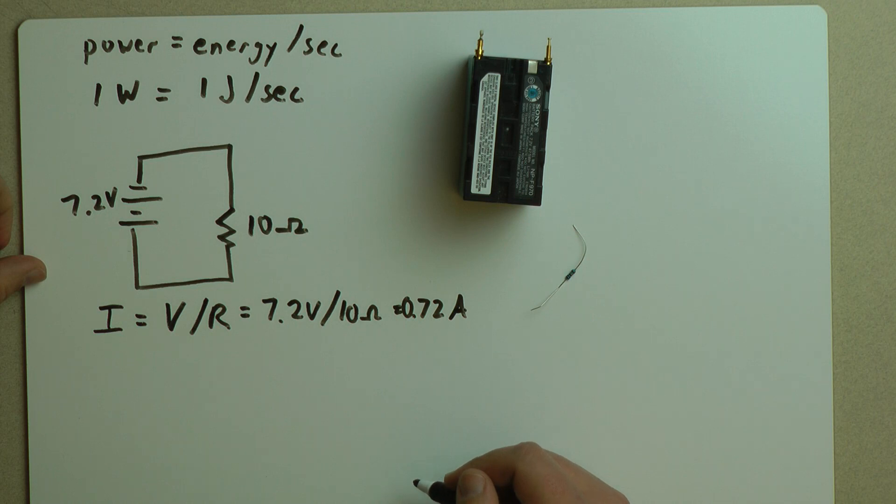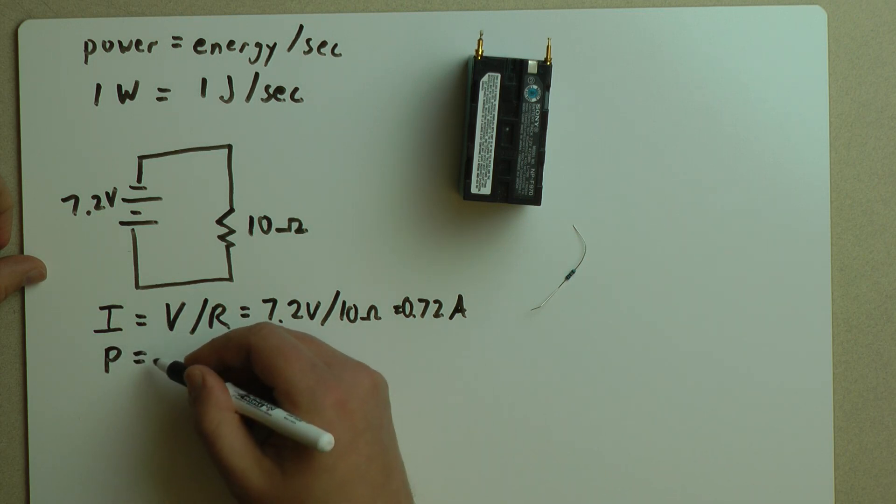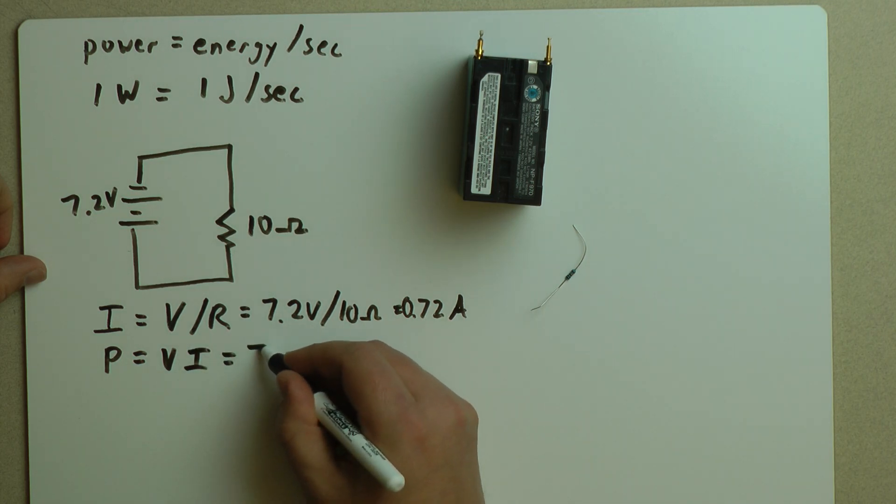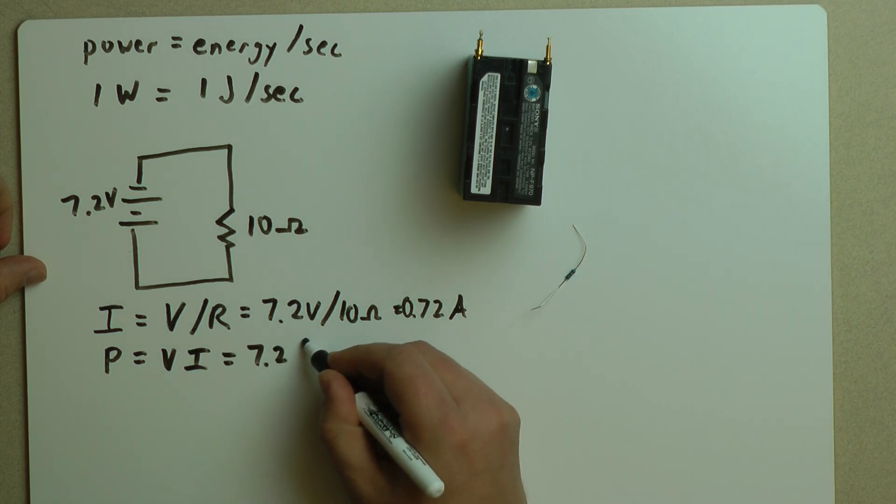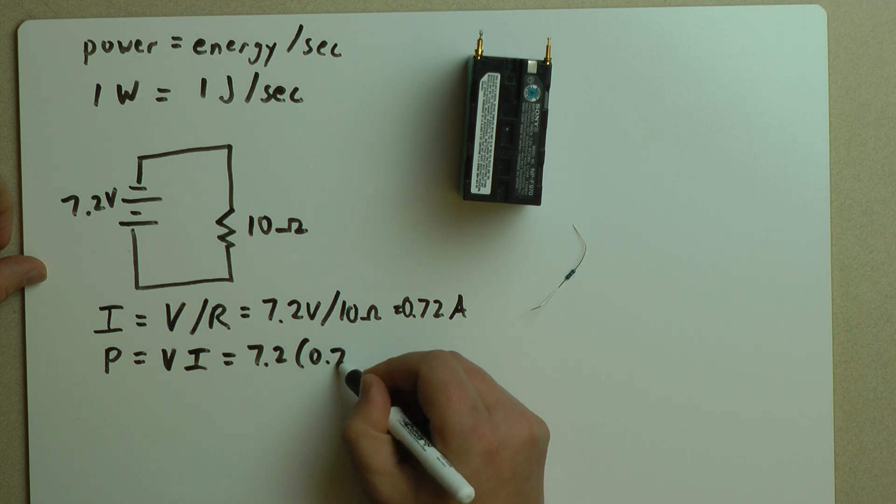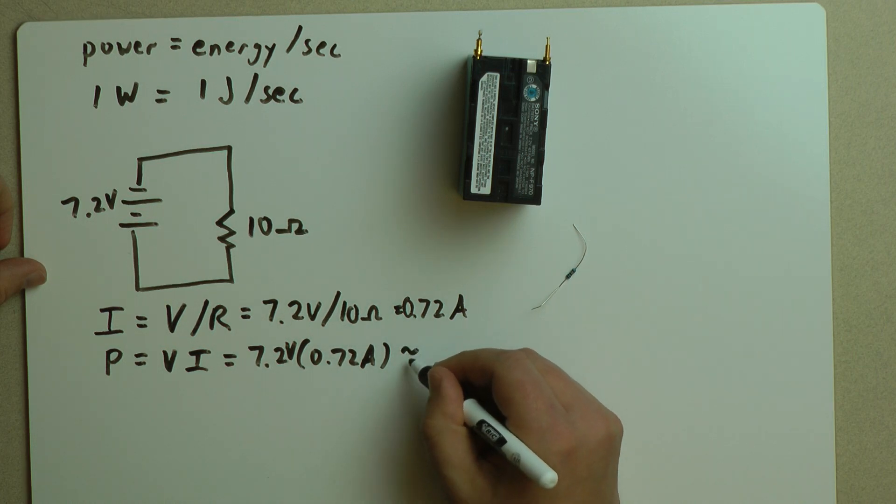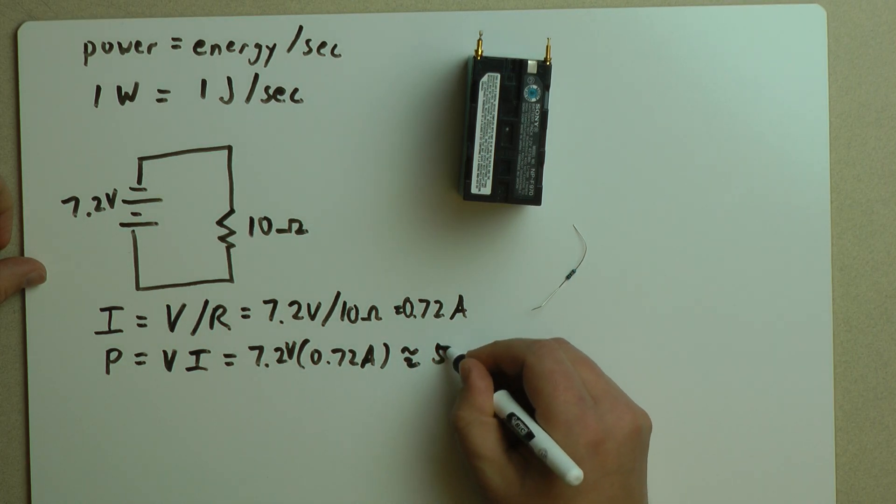Well, how much power is that? We know power is equal to voltage times amperage. In this case, 7.2 volts times 0.72 amps, which is approximately equal to about 5 watts.